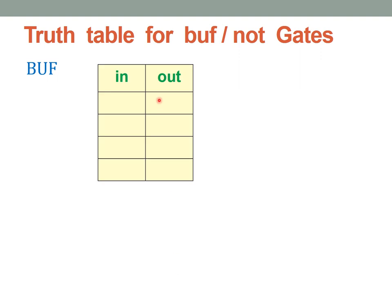Now let us look into the truth tables for the buffer and not gates. This is the truth table for a buffer with a single input and a single output. The input can be 0, 1, X, and Z — these are the four values supported in Verilog. A buffer just transfers the input value to the output. If the input is 0, we get output 0; if input is 1, output is 1. But if the input is X or Z, the output will be an unknown condition.